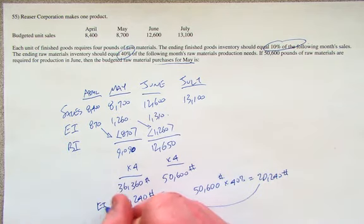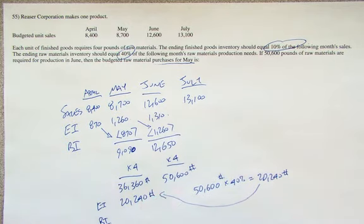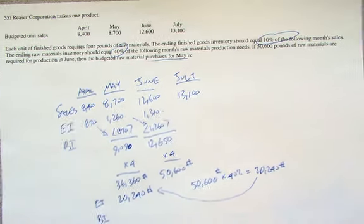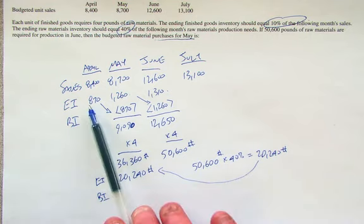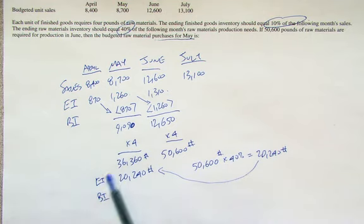So in addition to the 36,000 that we need to satisfy May's production numbers, we also need an ending inventory. Now, the good thing is we're going to have a beginning inventory. How much is that beginning inventory? It might seem like we don't have enough information, but we do.